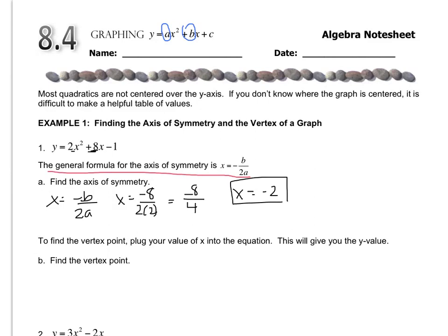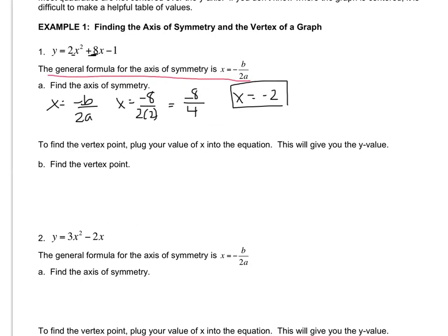To find the vertex, you plug in negative 2 into the formula, and then it tells you what the point is. So I want to know when x equals negative 2, what do I get out of y? So y equals 2 times negative 2 squared, I'm going back up to this formula right here, plus 8 times negative 2 minus 1.